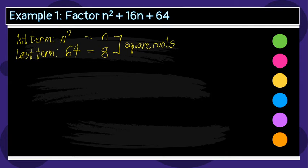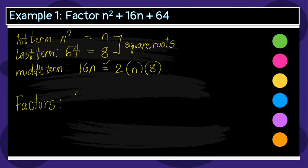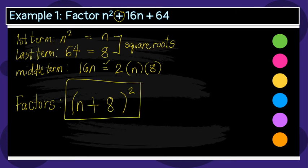Next, let's check if the middle term, which is 16n, is twice the product of the square roots of the first and last terms. So, 2 times n times 8 equals 16n. They are equal, so this is correct — the conditions are satisfied. To get the factors, write one parenthesis and square it, then write the square root of the first term and the square root of the last term. Since the sign of the middle term is positive, put plus. The factor of n squared plus 16n plus 64 is the quantity of n plus 8, squared.